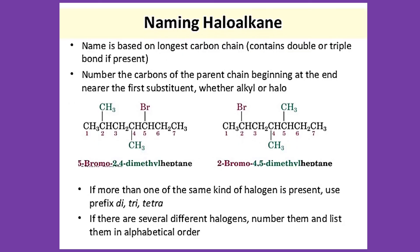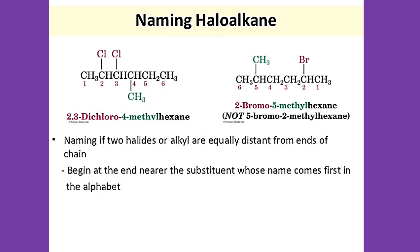In naming haloalkanes, the name is based on the longest carbon chain, containing a double or triple bond if present. Number the carbons of the parent chain beginning at the end nearer the first substituent, whether alkyl or halo. For example: 1-bromo-2,4-dimethylhexane, and 2-bromo-4,5-dimethylhexane. If more than one of the same kind of halogen is present, use the prefix di-, tri-, or tetra-. If there are several different halogens, number them and list them in alphabetical order. In naming two halides or alkyls that are equally distant from ends of the chain, begin at the end nearer the substituent whose name comes first in the alphabet — for example, 2,3-dichloro-4-methylhexane, where chloro comes first before methyl.